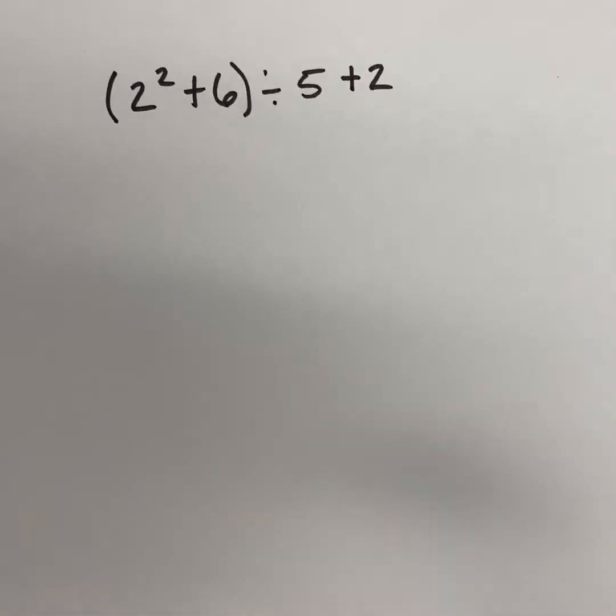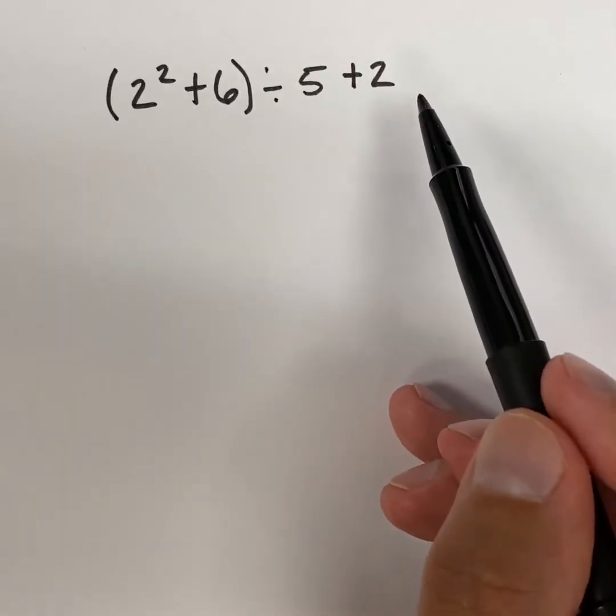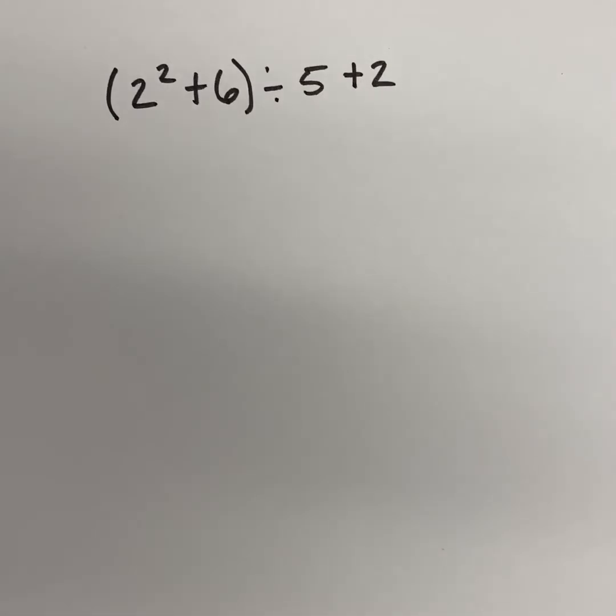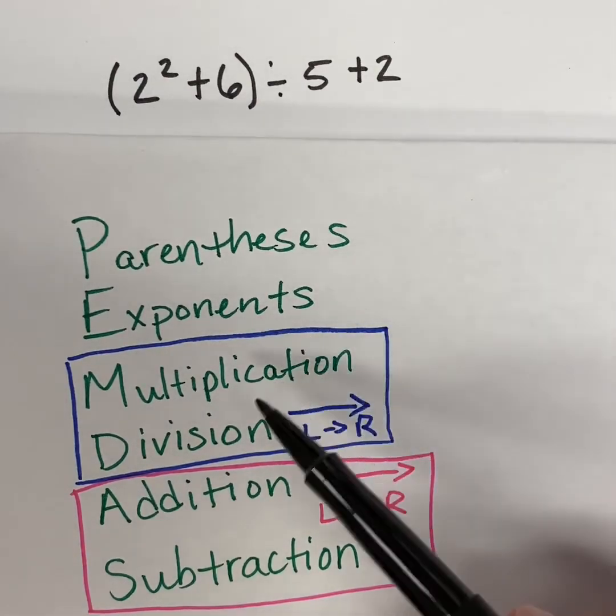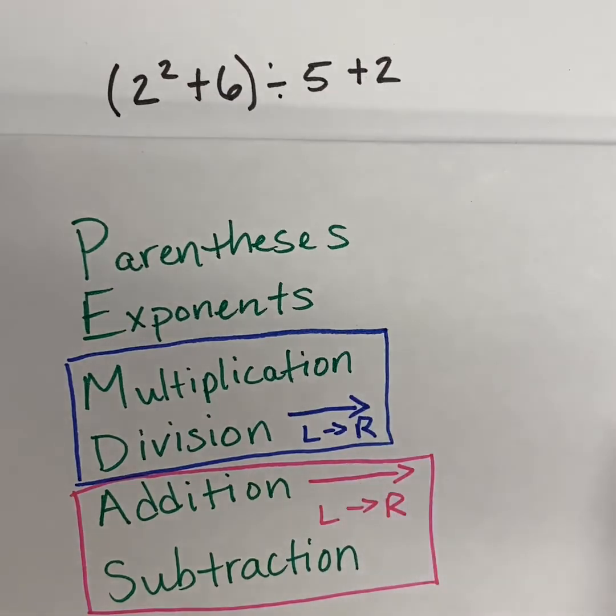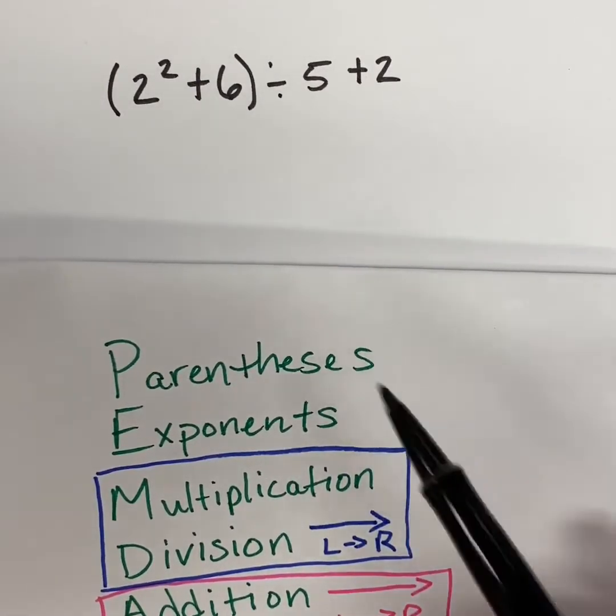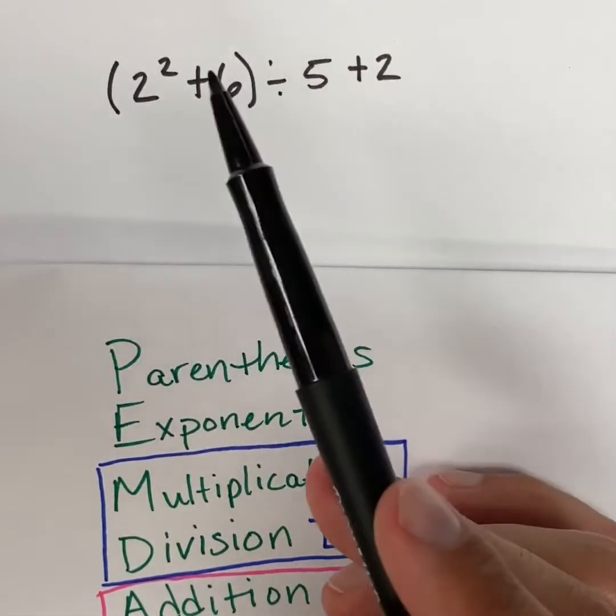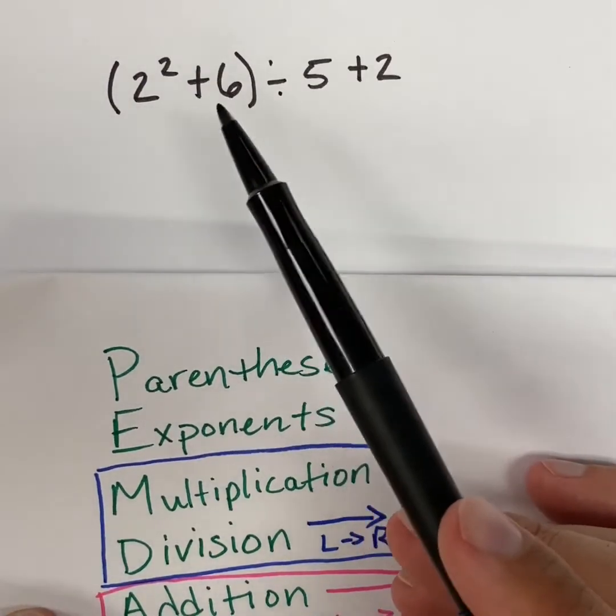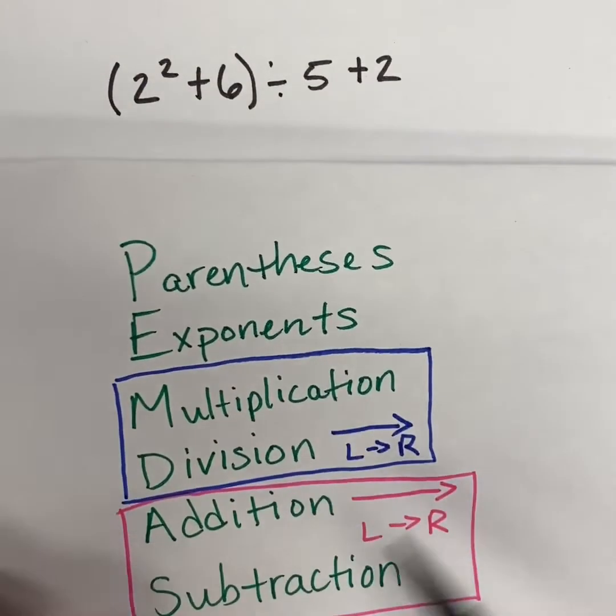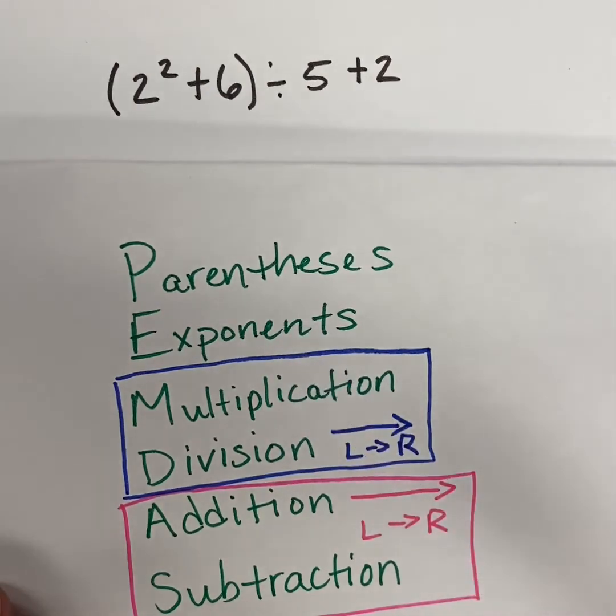So here is our next problem. We have in parentheses 2 squared plus 6 divided by 5 plus 2. So let's refer back to what we learned in our last example. We are going to use PEMDAS to solve these problems. Parentheses first, then exponents, multiplication and division left to right. And then we're going to do addition and subtraction left to right. So if we look at this problem, we do have parentheses. So we have to do whatever is in parentheses first. So that means we have to do all of this first, whatever is inside of here. If you have parentheses, it's kind of like putting a PEMDAS problem inside of a PEMDAS problem. What do I mean by that? Well, I'm not going to add 6 first inside of my parentheses. I still have to follow these order of operations. So the first thing I'm going to have to do is I need to do my exponents because that's the second step or the second thing that you're looking for in an order of operations problem.